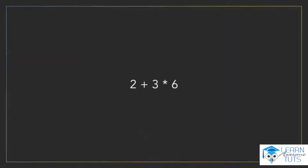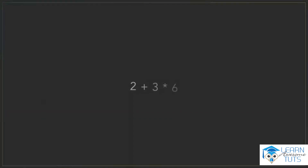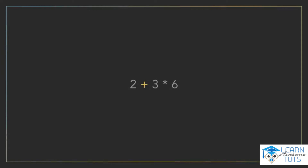Now, let's look at another expression where the answer may surprise you. Two plus three times six. What do you think this expression evaluates to? It's 20. Now, if you thought 30, that's understandable. But in programming, the default order of operations is the same as in mathematics. The plus or addition operator in our example is evaluated after the asterisk or multiplication operator. That's why we get 20 instead of 30.